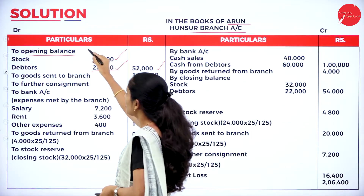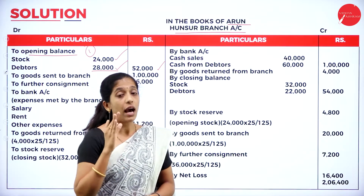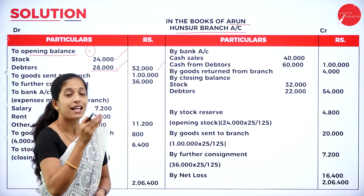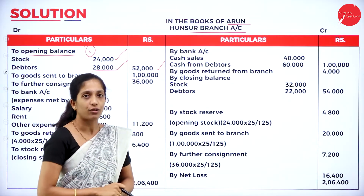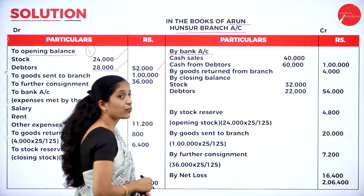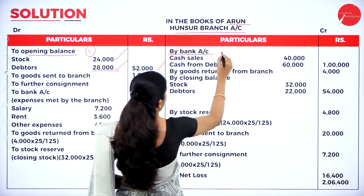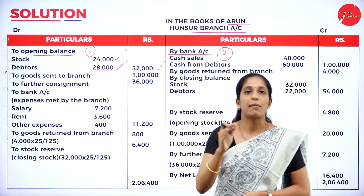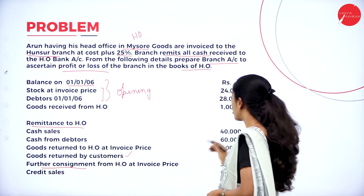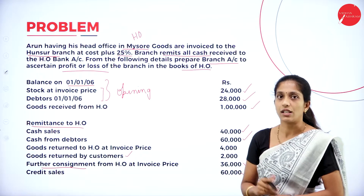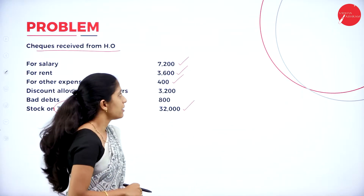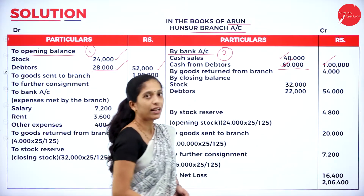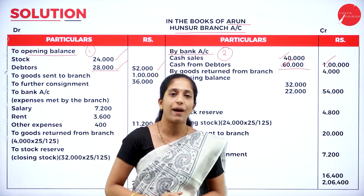Second step: whatever income is earned in the branch must be remitted to the head office. Here they have made cash sales and received cash from debtors, both remitted back. Record on the credit side as 'by bank account' — cash sales 40,000 and cash from debtors 60,000. Total both and write in the outer column: 1 lakh. That completes the second step — recording the amount remitted back to the head office.